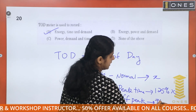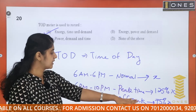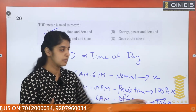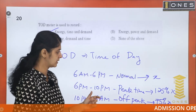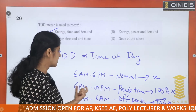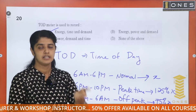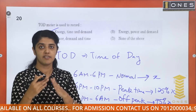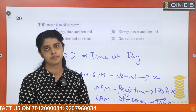In peak time the charge is 125% of the unit charge, while in off-peak time the charge is 75% of the unit charge. At 6 pm to 10 pm, energy consumption is high because that is peak time. The KIC side of the power supply is maintained constant, and consumption is adjusted accordingly. This is the function of the TOD meter.